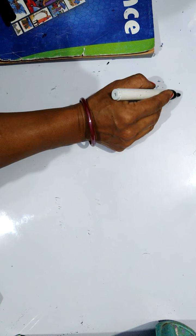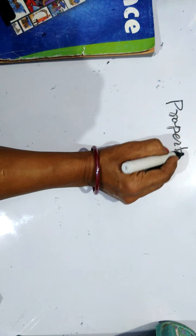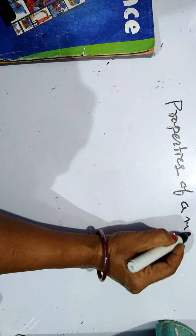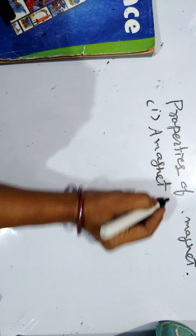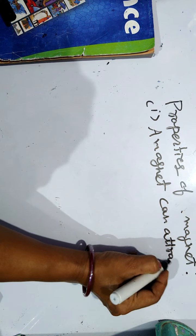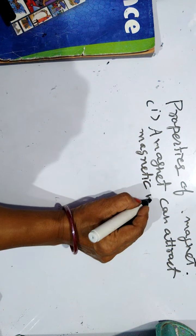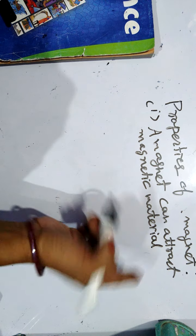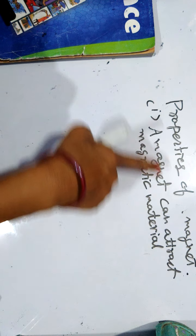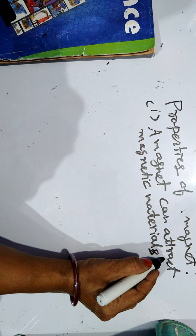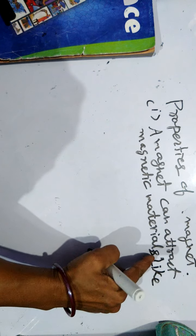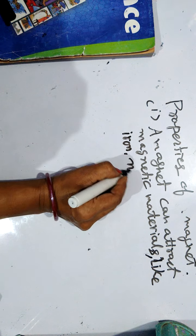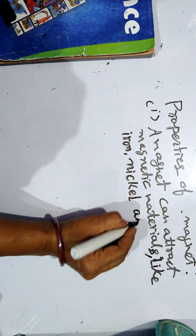Now we are going to summarize all these properties. You will have a question about the properties of magnet. First property: a magnet can attract magnetic materials. The materials that get attracted towards a magnet are magnetic materials. Second property: a magnet has two poles, namely north pole and south pole. Third property: same poles of two magnets repel each other. Fourth property: opposite poles of two magnets attract each other.